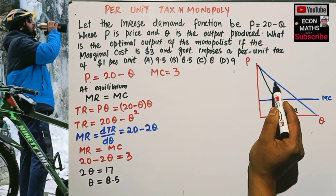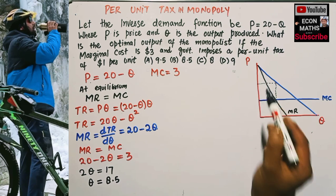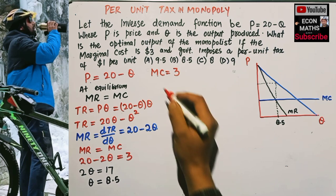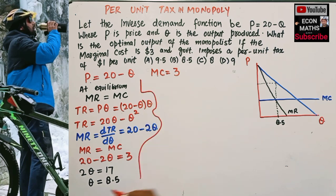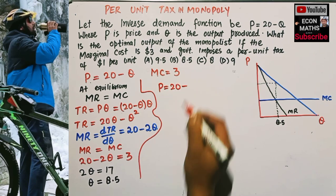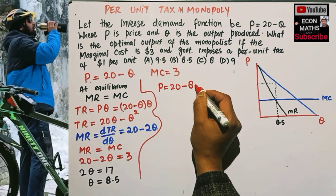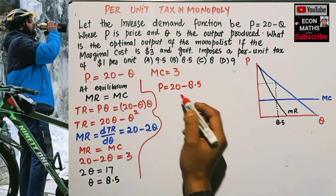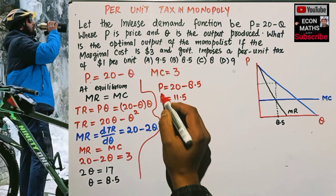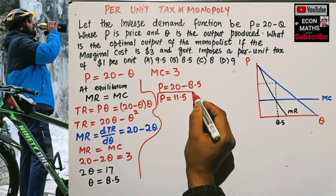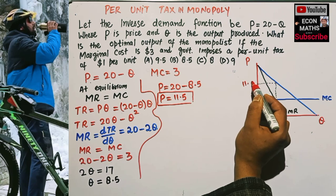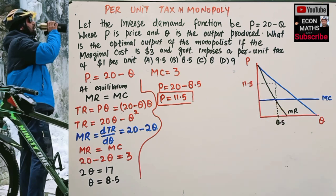We can also find the equilibrium price. The price will be equal to p = 20 minus q = 20 minus 8.5, which gives us an equilibrium price of 11.5. This scenario is before the imposition of tax.